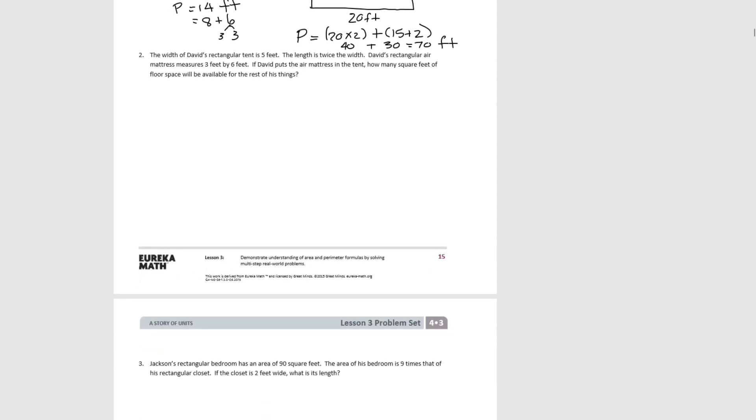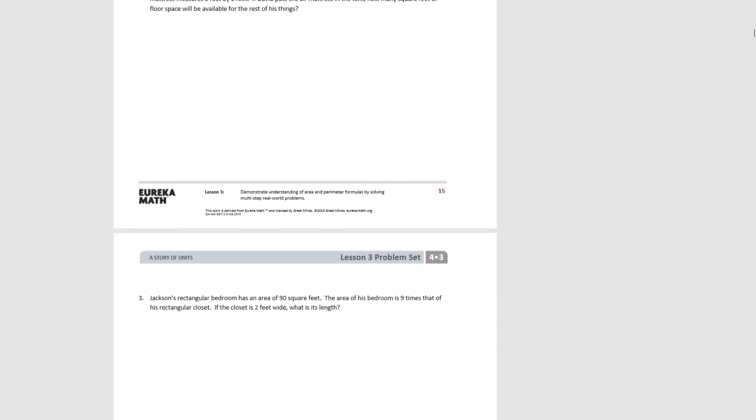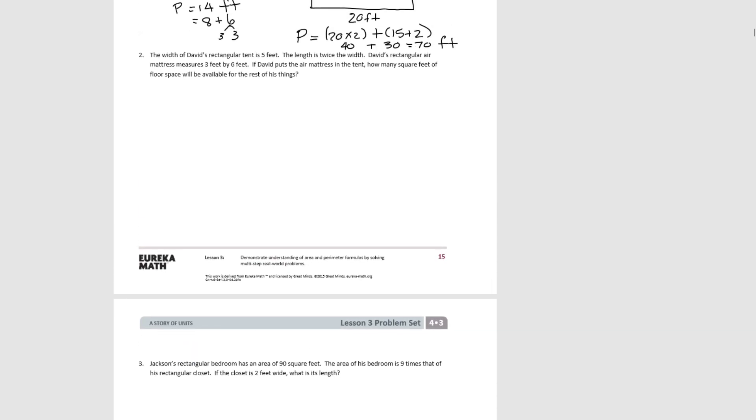Pause the video and you try number 2. Okay, let's see what we did with this one. So David has a rectangular tent. The width is 5 feet. The length is twice the width. So if the width is 5 feet, 2 × 5 = 10 feet. So we know that's the length of his tent.